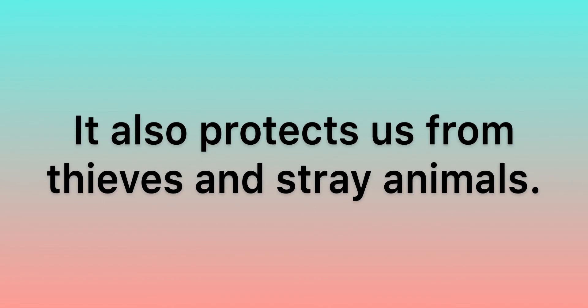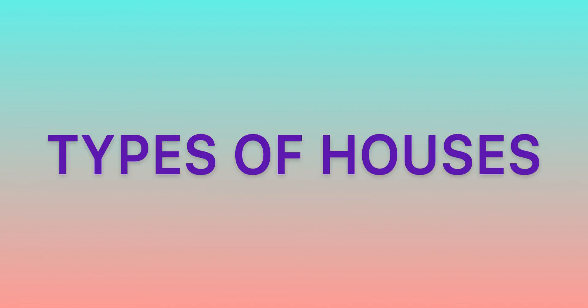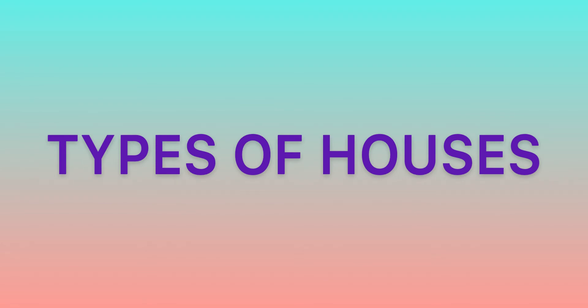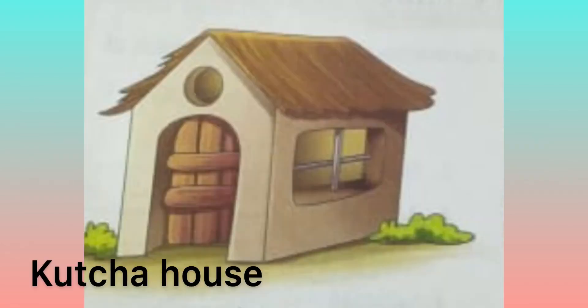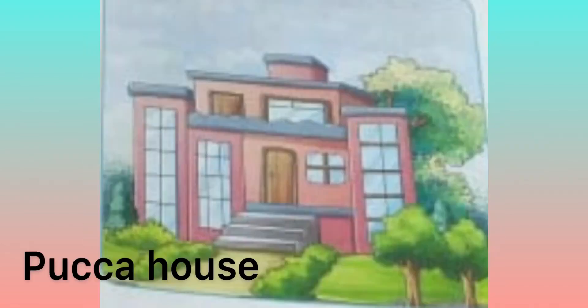Today we will see types of houses. Children, two types of houses are kachha houses and pakkah houses.